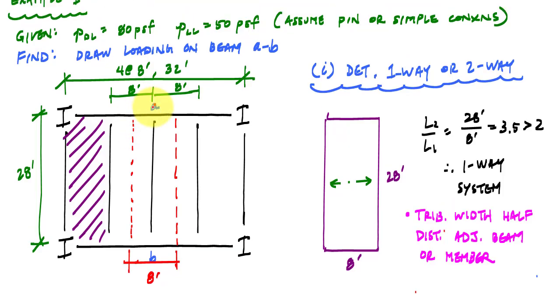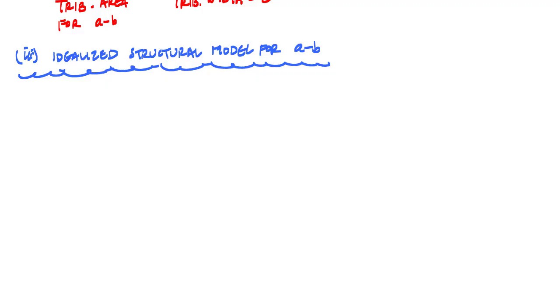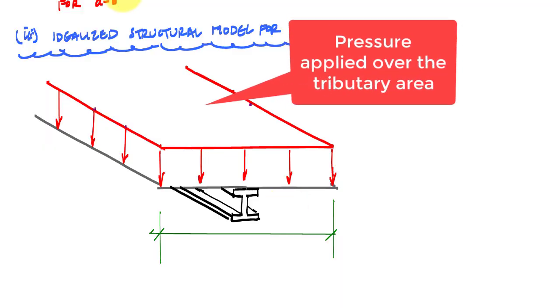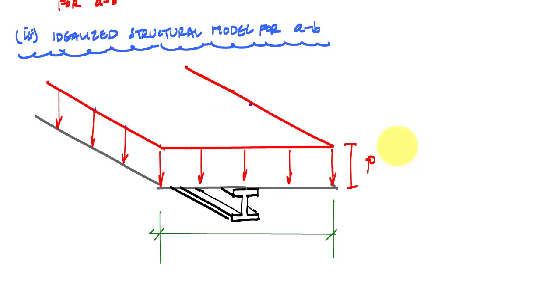A 3D model of beam AB might look like this. All right, so here is my amazing 3D model. This red area here is the pressure that's applied on the floor, and here is my tributary width, 8 feet.